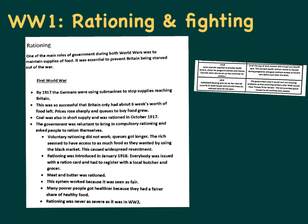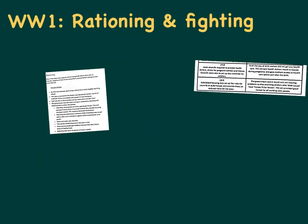This caused widespread resentment. By January 1918, the government changed tack and compulsory rationing was introduced. Everyone was issued with a ration card and had to register with a local butcher and grocer. Meat and butter were rationed. This system worked because it was seen as very fair - many poorer people actually got healthier during this period because they had a fairer share of healthy food, and their ration cards might allow them more meat and vegetables than they would normally access. Rationing was never as severe as in World War II, but it began from January 1918.